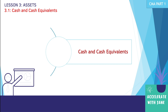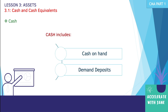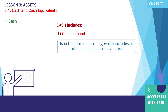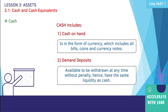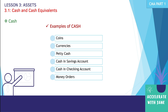Now let's go to the main topic: cash and cash equivalents. Cash includes two things: cash on hand and demand deposits. Cash on hand is in the form of currency, which includes all bills, coins, and currency notes. Demand deposits are available to be withdrawn at any time without penalty and have the same liquidity as cash, so they are included as part of cash. Examples include coins, currencies, petty cash, savings accounts, checking accounts, and money orders.